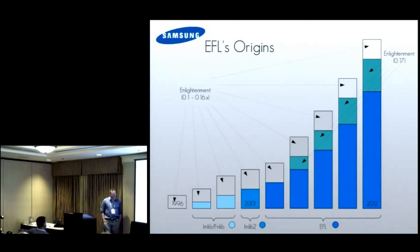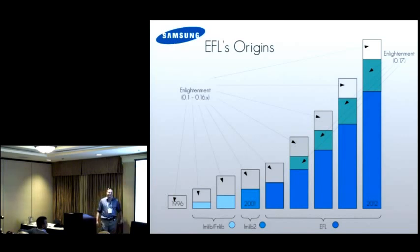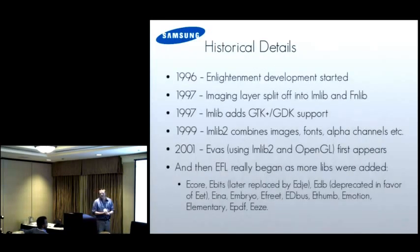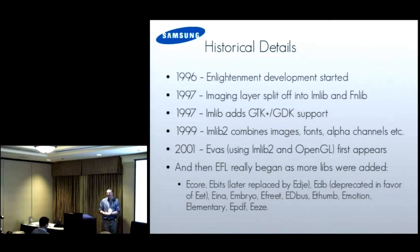A quick history. Enlightenment is quite old - it started in 1996, and has been going for a very long time. Back then it was really just a window manager, which then started adding little libraries like MLib and the font library. That became MLib2, which got thrown away and changed for EFL. By today, you can see that only a small amount of the code is actually Enlightenment. In 1996, when I was a crazy university student spending time in the laboratories writing window managers - as obviously everyone does in university, because it's fun - that's where I started writing Enlightenment.